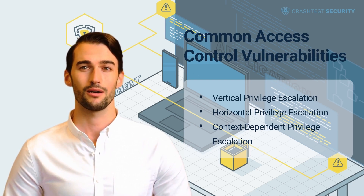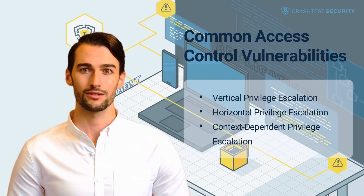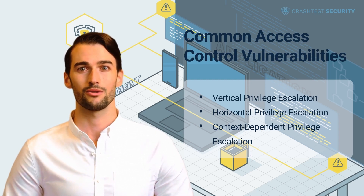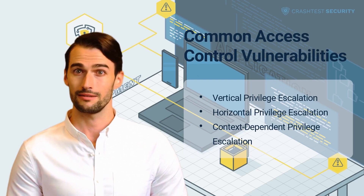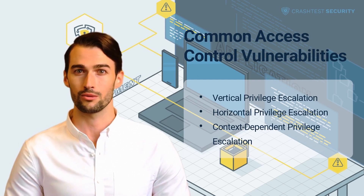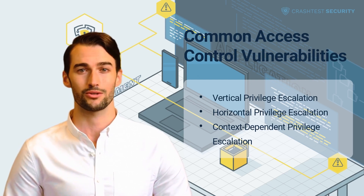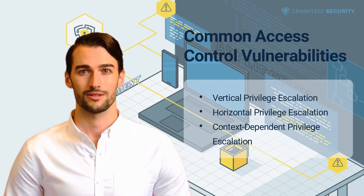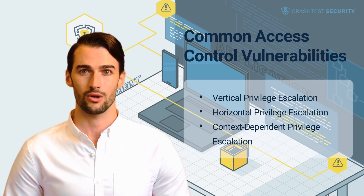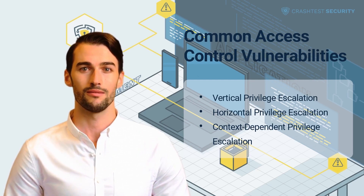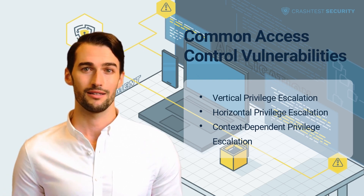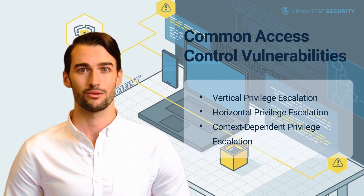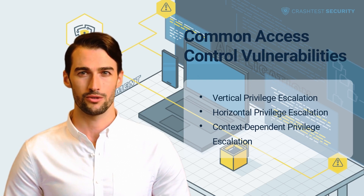Horizontal privilege escalation: horizontal access controls enable different application users to access similar resource types. These mechanisms restrict access to resources only to the group of users allowed to access them. For instance, a banking application lets clients view their own transaction records, but not those of other users. Broken horizontal access controls enable attackers to access resources belonging to other users and are caused by improper ID controls.